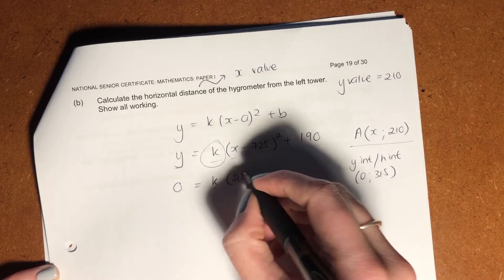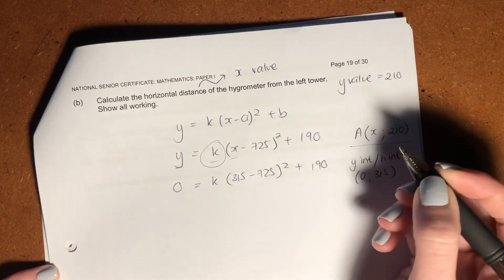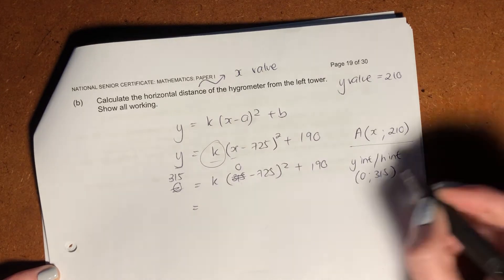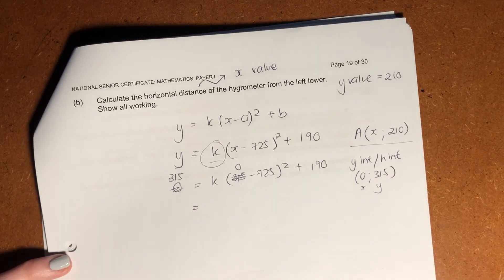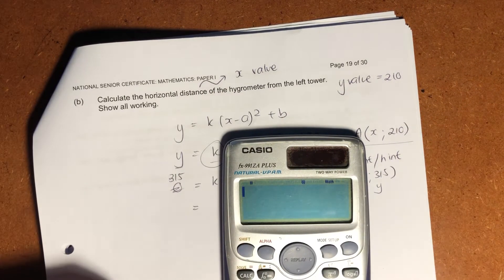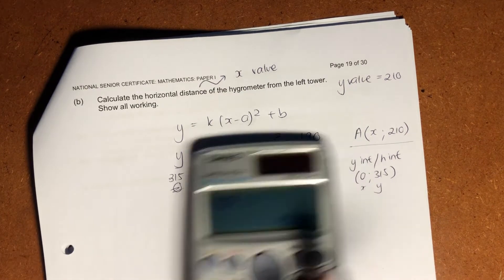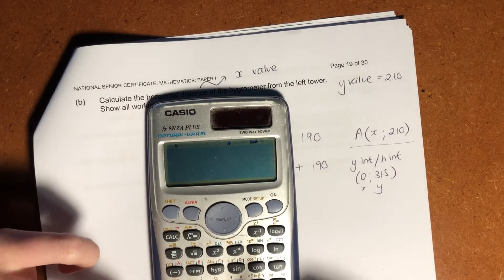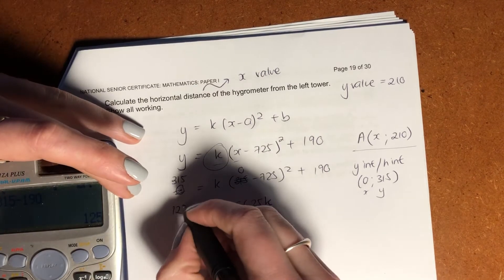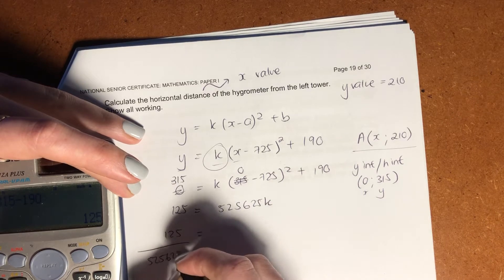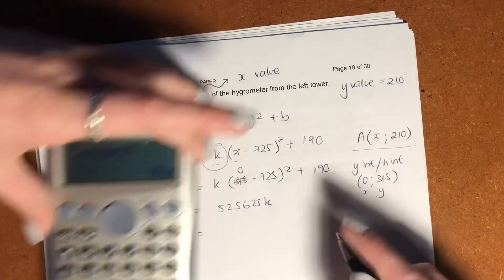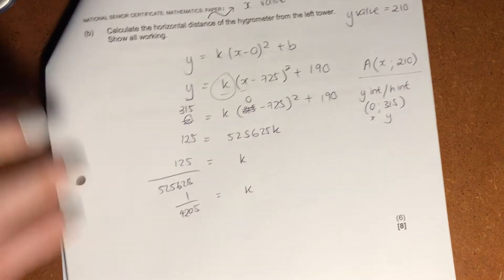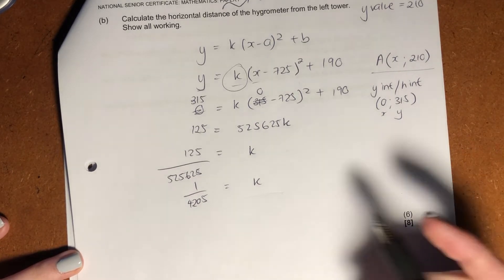315 equals 0k times 315 minus 725 all squared plus 190. You'll see here that this is going to, ooh, I've put this in the wrong way, sorry. This here is my y value, and that is my x value. Be careful there to remember which is your x and which is your y. Be very careful there. Okay, then we just go and we solve this. So 725 all squared is going to give me 525,625k. Then we bring that over 315 minus 190 gives me 125. 125, and I'm going to say 125 divided by 525,625, and we know that k is going to equal 1 over 4205. So k is quite small, but we don't really mind. It's not like we had a preconceived idea of what k should be, but now we have the value of k, so now we can go and solve for the x value of the hygrometer.